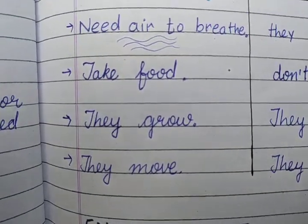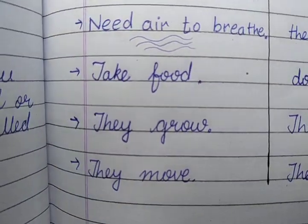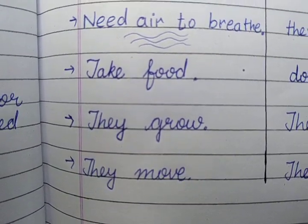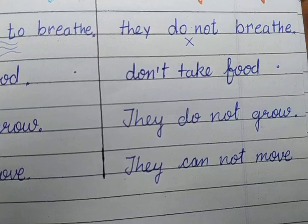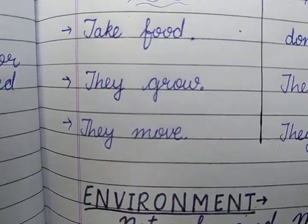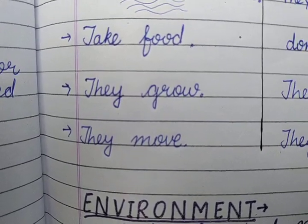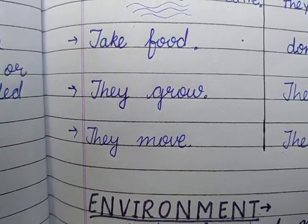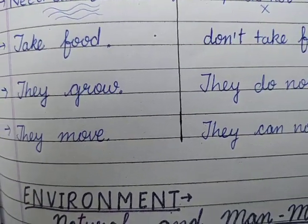Living things grow, like plants grow taller and we grow taller — each and every living thing grows. But non-living things do not grow. Living things move, like insects, you, me, birds — we all move. But non-living things do not move.